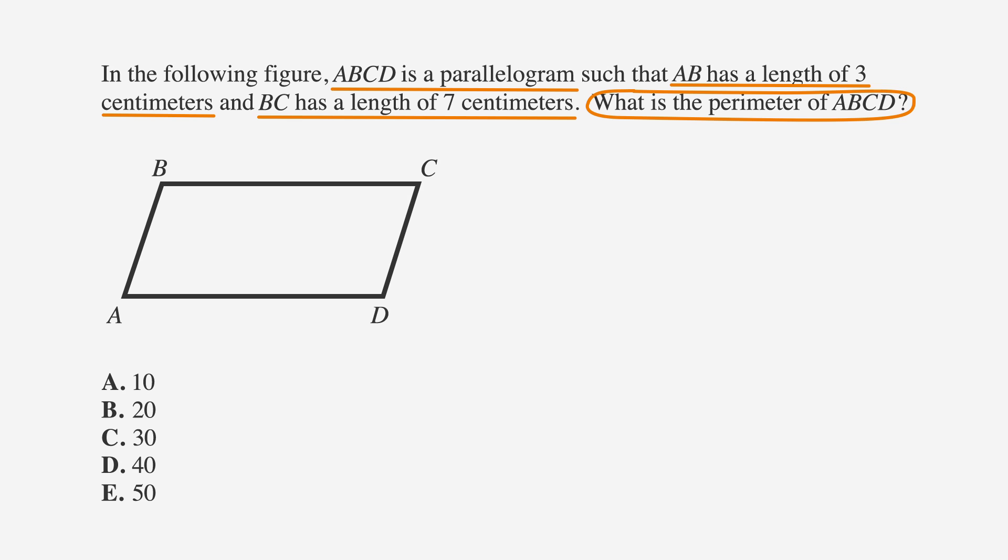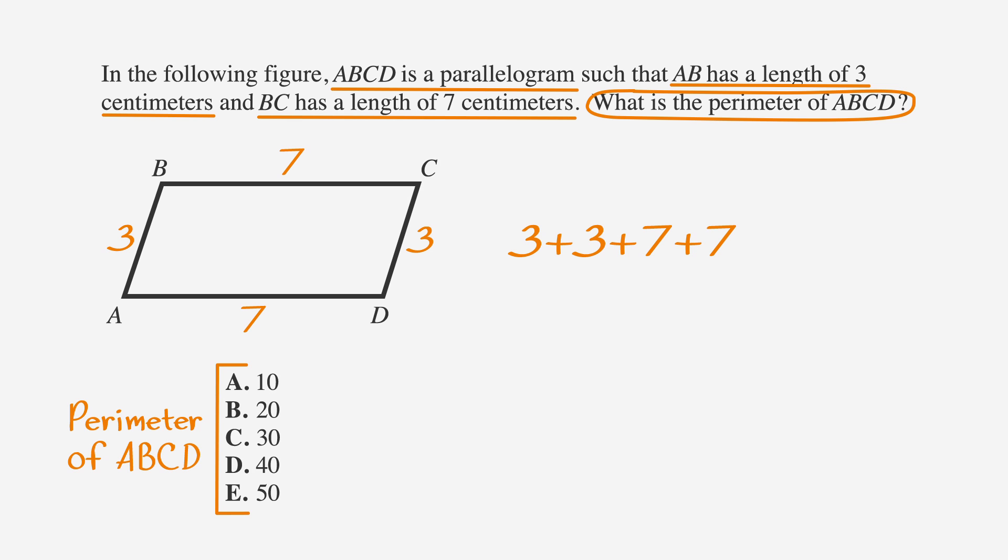We'll underline our facts and circle the key words as usual. The answer choices represent perimeter, so let's label them that. The first thing we need to do is label the figure with what we know. AB has a length of 3 and BC has a length of 7. Since opposite sides on a parallelogram are equal, we know that CD is 3 and AD is 7. To find the perimeter, we add 3 plus 3 plus 7 plus 7, which is 20 centimeters, or choice B.